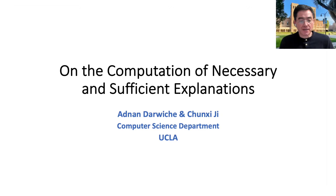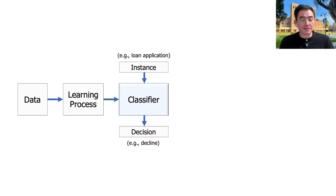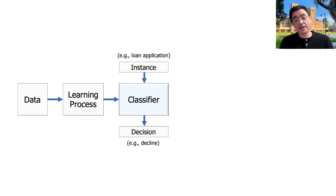Welcome everyone. This is Adnan Darwish, and I'll be talking about our work on Necessary and Sufficient Explanations. This is joint work with Chunji Ji, and this talk is about classifiers and explaining the decisions made by classifiers.